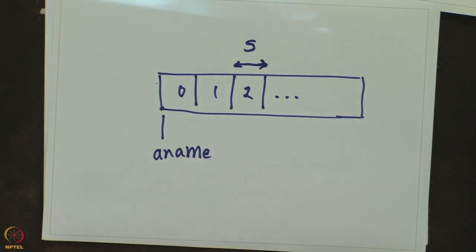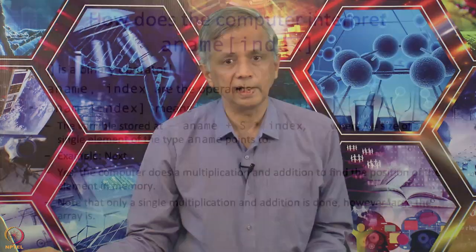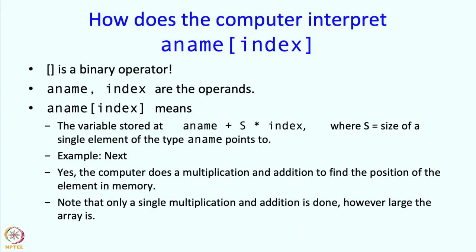So that is really this calculation. You have to note that a single multiplication and addition is done no matter how large the array is. This is why an array is often called a random access data structure. You can get to any element of that array in essentially the same amount of time by doing just a single multiplication and addition.